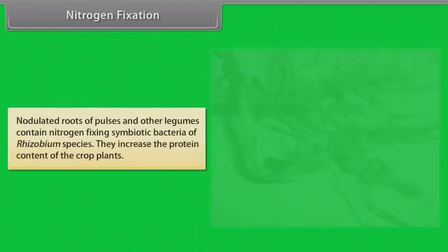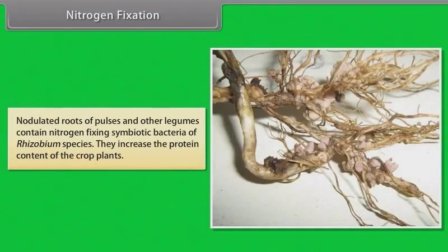Nitrogen fixation: Nodulated roots of pulses and other legumes contain nitrogen-fixing symbiotic bacteria of Rhizobium species. They increase the protein content of the crop plants.